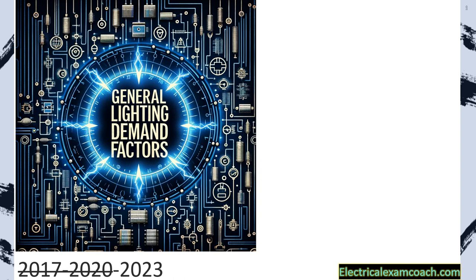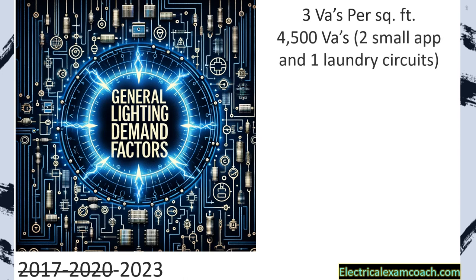Hey everyone, welcome back. I am the Electrical Code Coach from ElectricalExamCoach.com. Today we're going to learn about the general lighting demand factor, and that includes our three VAs per square foot and our 4,500 VAs for our two small appliance and one laundry circuits.